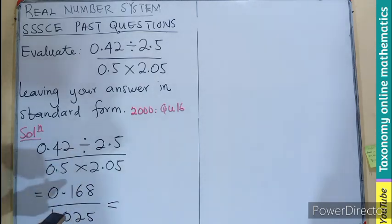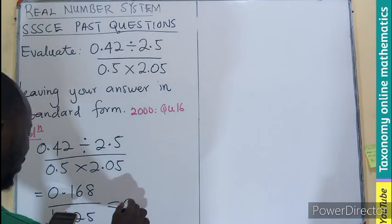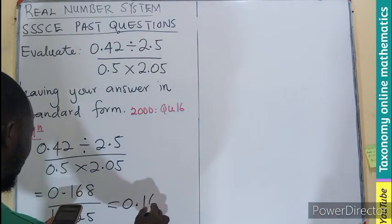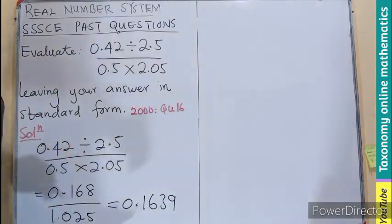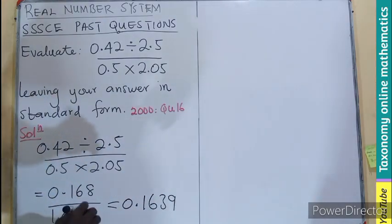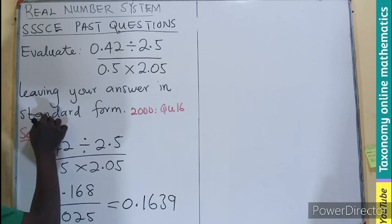Now, dividing the two together, 0.168 by 1.025, that will give us 0.1639 to four decimal places. But we are leaving our answer in standard form.